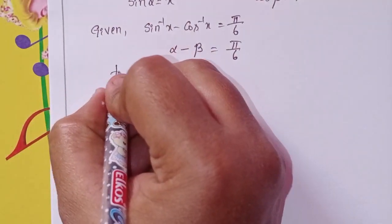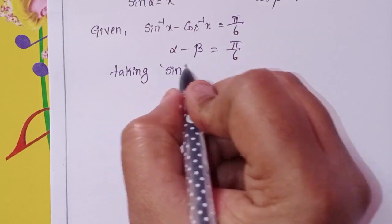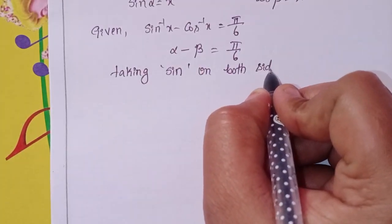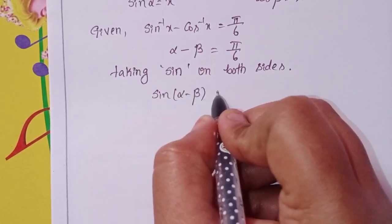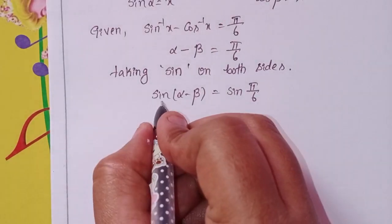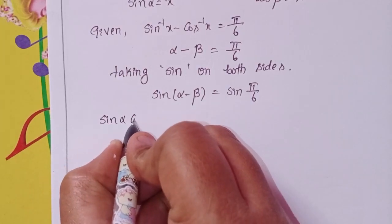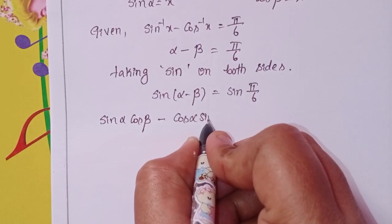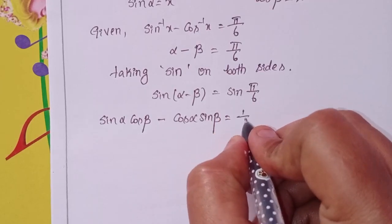Taking sine on both sides: sin(α - β) = sin(π/6). Expanding using the sine subtraction formula: sin α · cos β - cos α · sin β = 1/2.